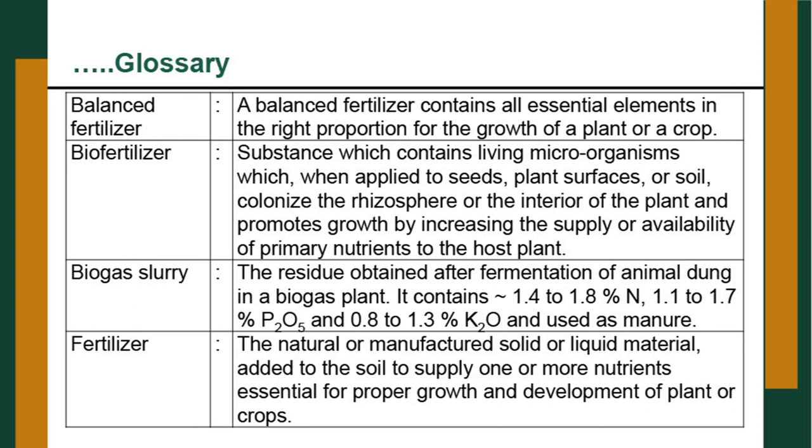Biogas is produced when dung from livestock is fermented anaerobically, producing methane and carbon dioxide. The methane is used for lighting or cooking in rural areas, and this also yields biogas slurry. The slurry is used as a manure — it can be applied directly to the field with irrigation water or after drying. The C:N ratio is narrowed down so it can be immediately applied, and it is richer in nutrients than farmyard manure or the original constituents.